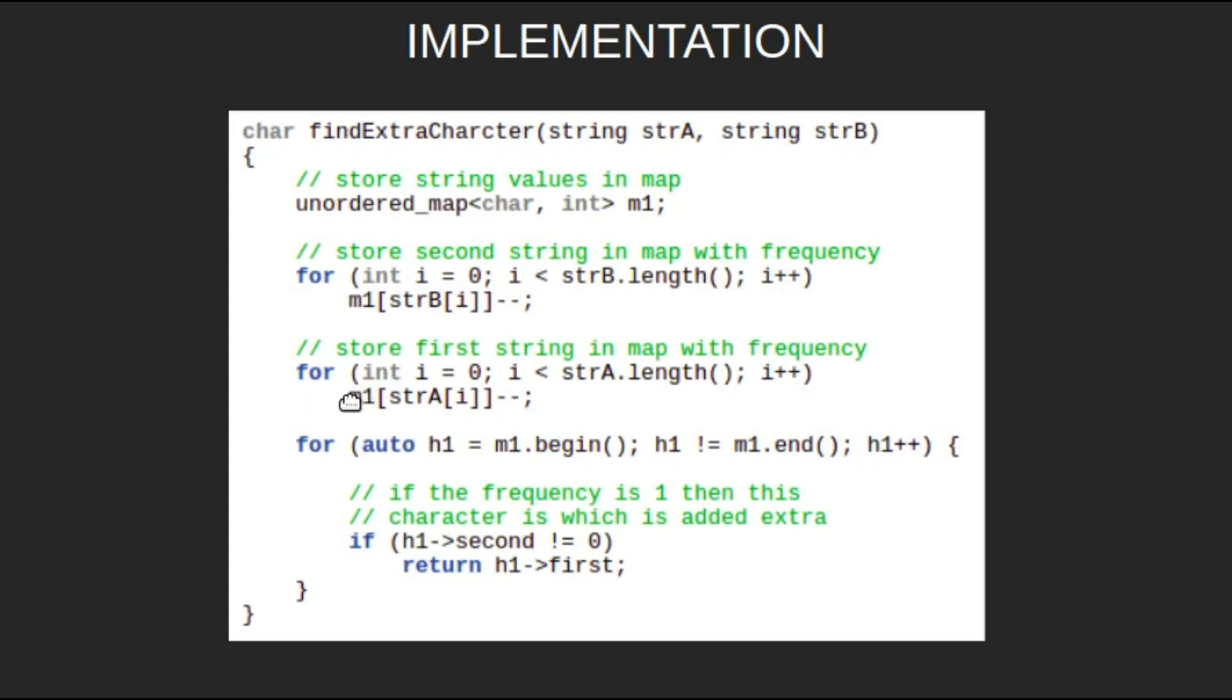Now remove all characters of the first string. Finally we will iterate through our map and the char with count one will be our answer. All other chars will have a count of zero.